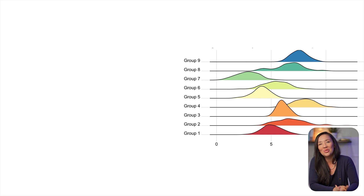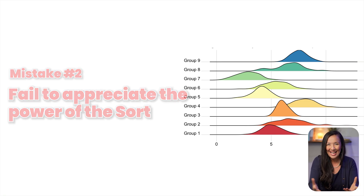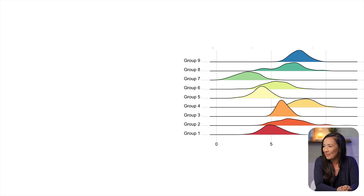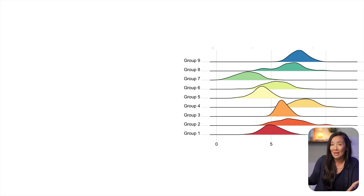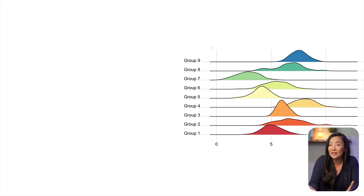The second thing I find that beginning visualization designers do is they fail to appreciate the power of the sort. It's a very simple thing that can be so important when communicating to other people. For example, that ridgeline plot is currently organized from group one to group nine — the default automatic ordering. If you don't change the default, it will organize information alphabetically, which generally isn't what you want. Instead, you want to think of a strategic way to sort the data that facilitates your user's task.